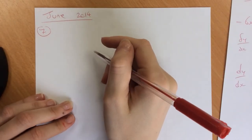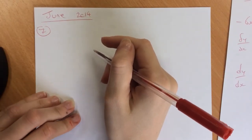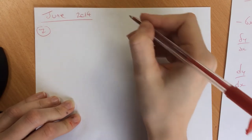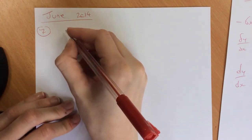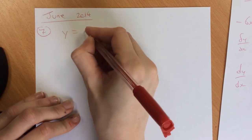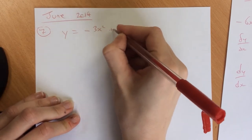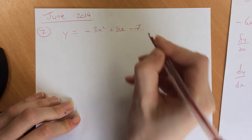This is June 2014 question 7C1 on differentiation from first principles. The question is y equals -3x² + 8x - 7.